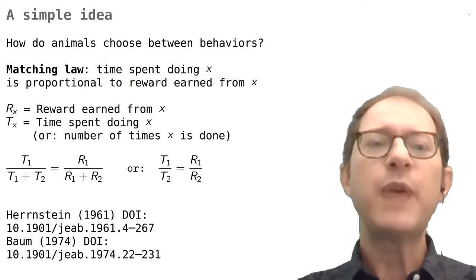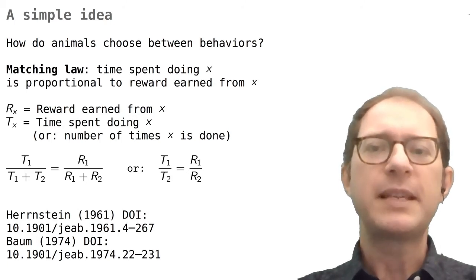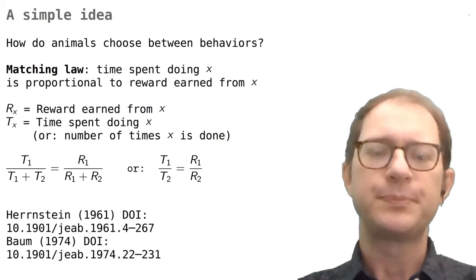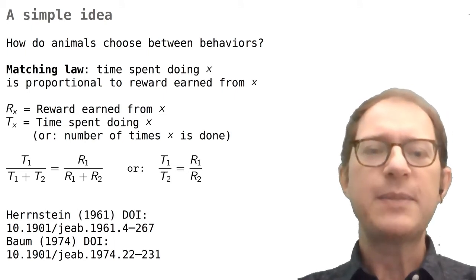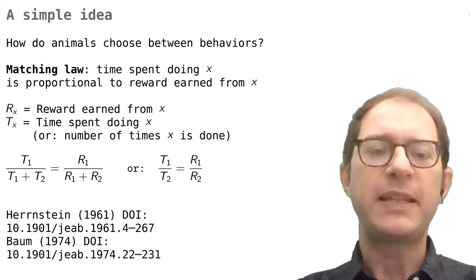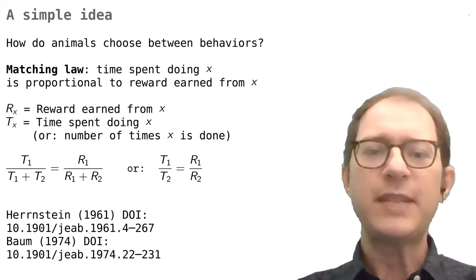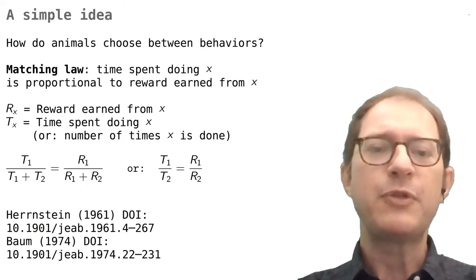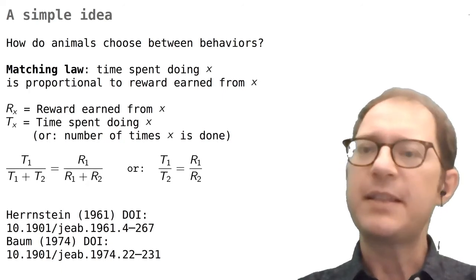So, let's consider a pigeon and take two actions that he can do, like pressing key 1 or key 2. If tx is the time spent on key x and rx is the amount of reinforcement earned from pecking at key x, then the matching law says that tx will be proportional to rx, as expressed in these equations.